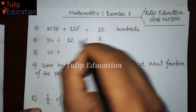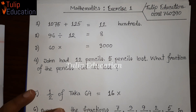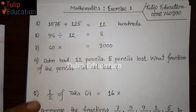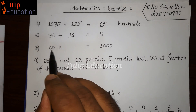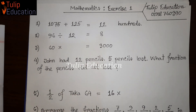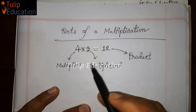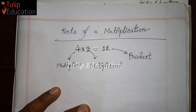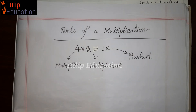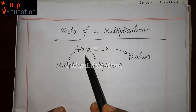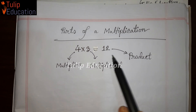The answer will be 12, because 12 divides 96. The number is 60 multiplied to get 3000. The number of parts of multiplication — if you know the number is 4 and 3, the product is 12.